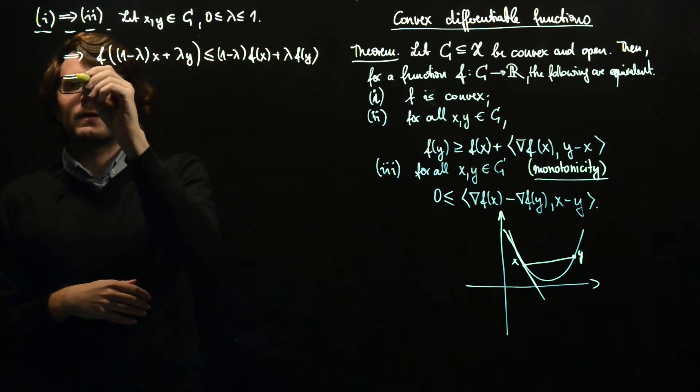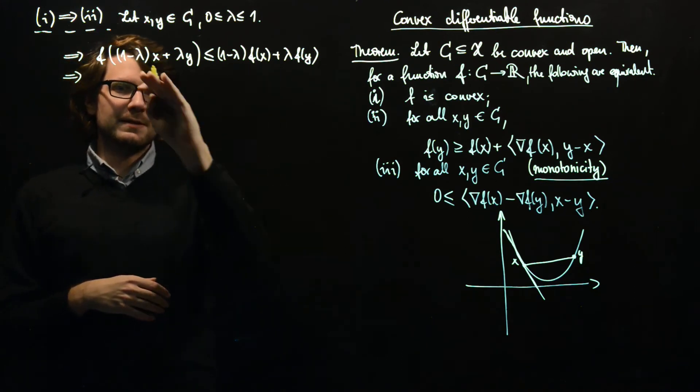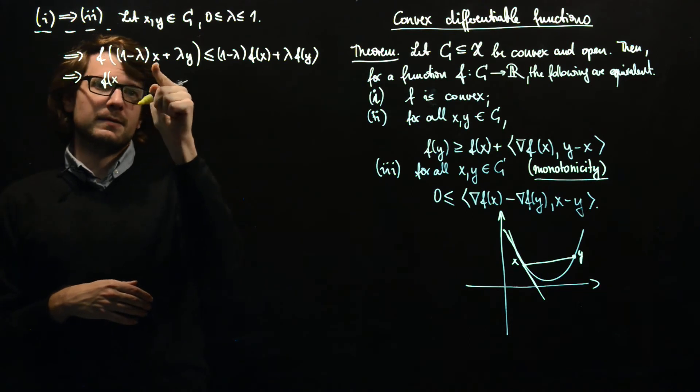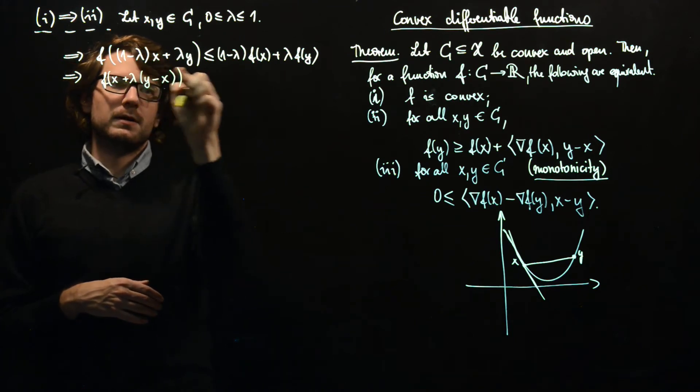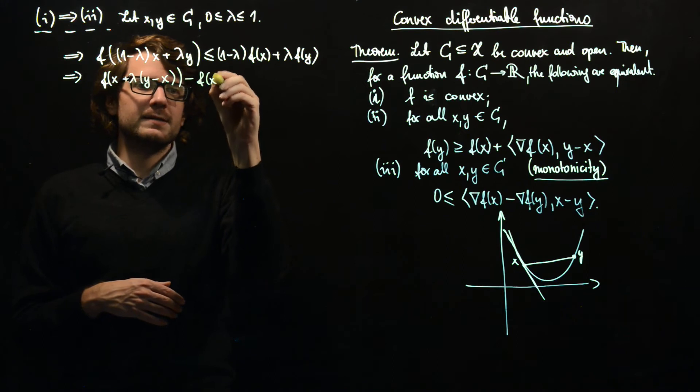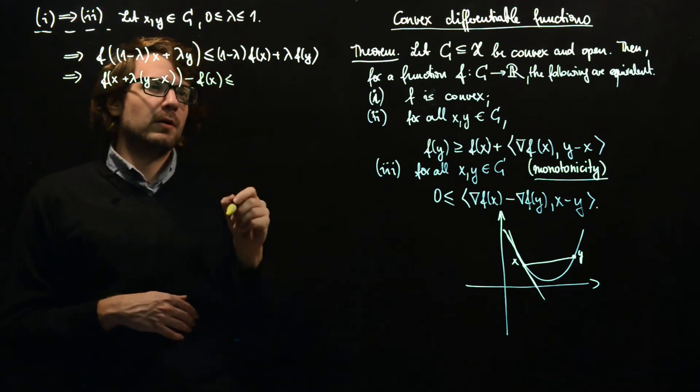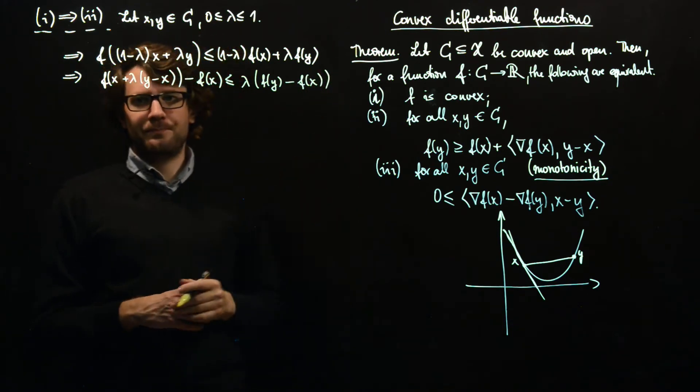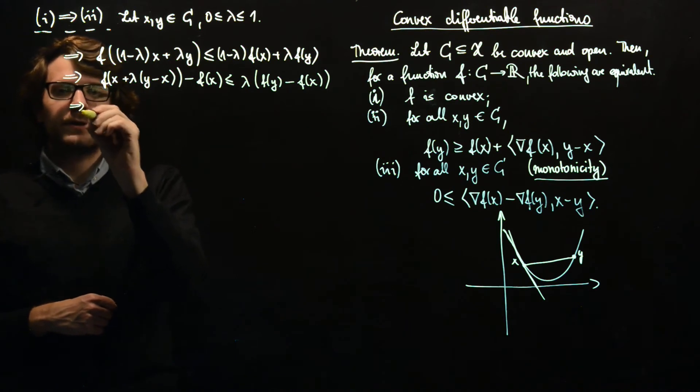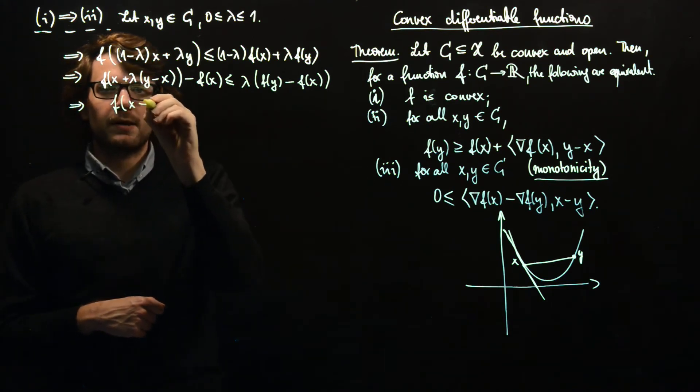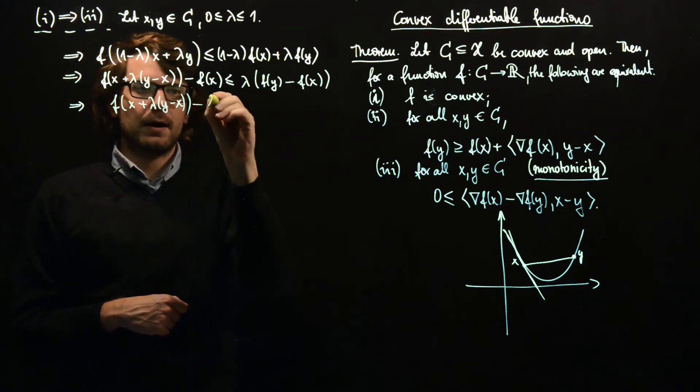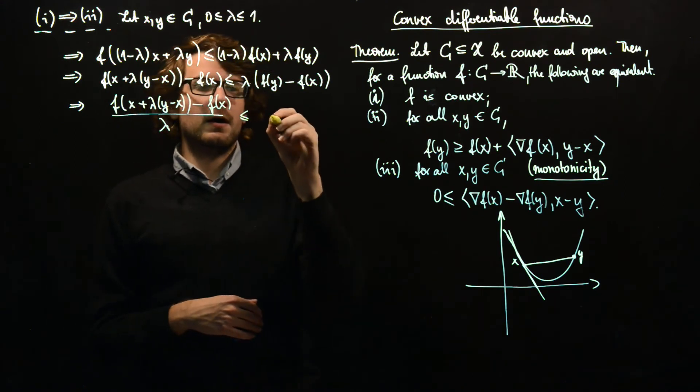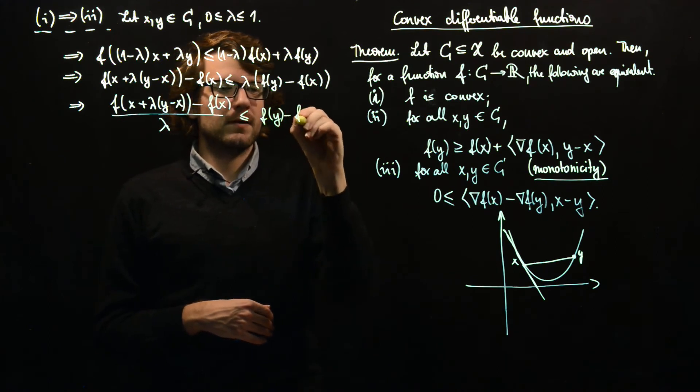So let's write this a bit more clearly. What we want to write is the difference quotient here. So if we just reformulate this, this will be X + λ(Y - X). This is the left hand side and now we subtract F(X). And then on the right hand side what remains is λ times (F(Y) - F(X)). So if we divide by λ then we get [F(X + λ(Y - X)) - F(X)]/λ, this is the desired difference quotient, ≤ F(Y) - F(X).